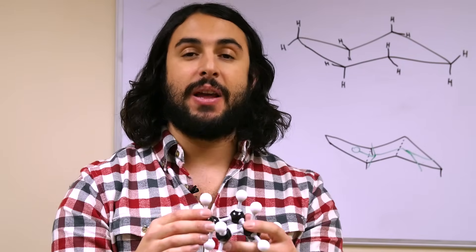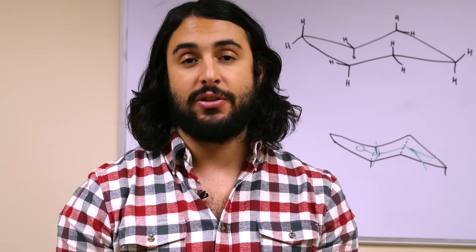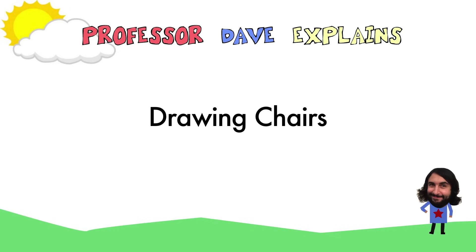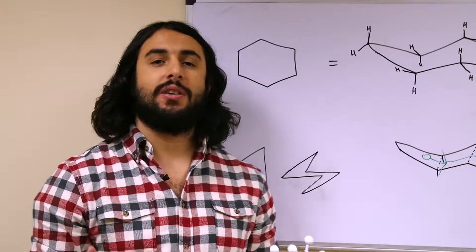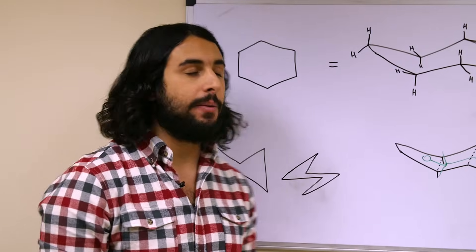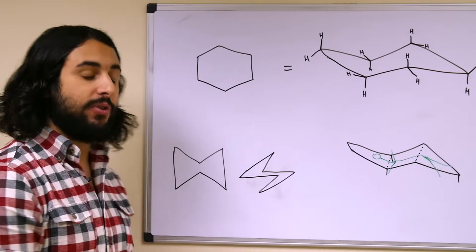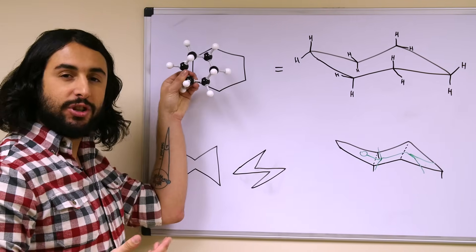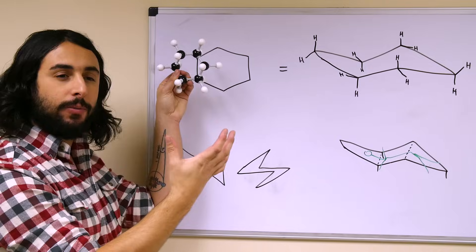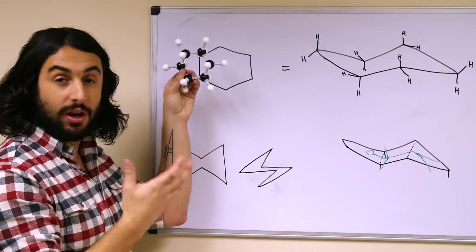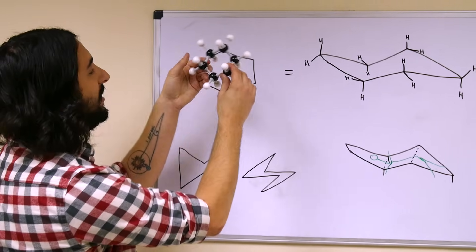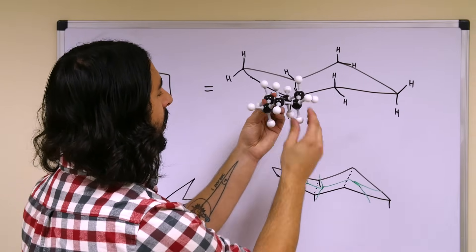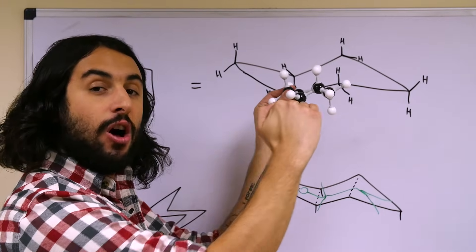What we want to do is be able to draw chair conformations. When we draw cyclic molecules in line notation, we're used to drawing them in a top-down view, but just as with Newman projections we had to rotate our perspective to assess conformations, we're going to have to do the same thing with these molecules. So what we want to be able to do is draw them edge on.